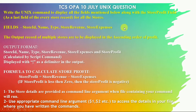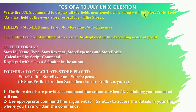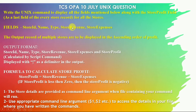We need to calculate the store profit field, append it to the already mentioned fields, and finally print the output in ascending order of profit. The output format is: store ID, name, type, store revenue, store expenses, and store profit. We also need to append a pipe symbol delimiter between records in the output. The profit formula is: store profit equals store revenue minus store expenses — that is, the fourth field minus the fifth field.